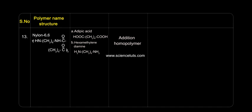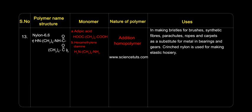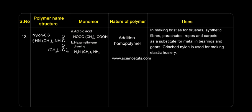Nylon 6,6: used in making bristles for brushes, synthetic fibres, parachutes, ropes, and carpets, and as a substitute for metal in bearings and gears. Crimped nylon is used for making elastic hosiery.